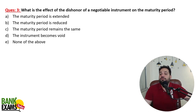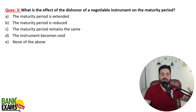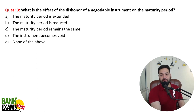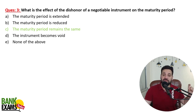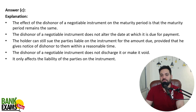What is the effect of dishonor of a negotiable instrument on the maturity period? Whenever somebody dishonors a negotiable instrument, they deny the liability — they are not making the payment on the due date. However, it does not have any effect on the maturity period; the maturity period remains the same. There is a default, and the holder — the person who has the right to receive the money — would sue the drawer. They can file the case.